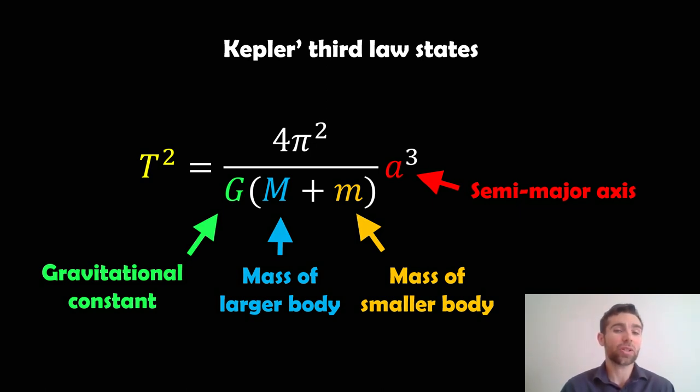We've got the mass of the larger object, which is the blue mass. We've got the mass of the smaller body, which is the orange colored m. We've also got the semi-major axis, which is red.